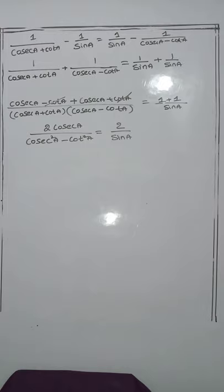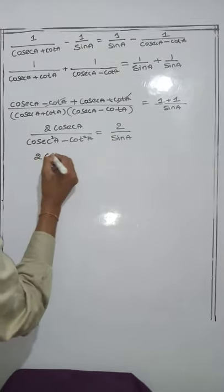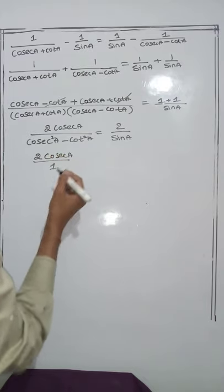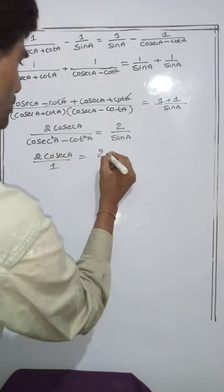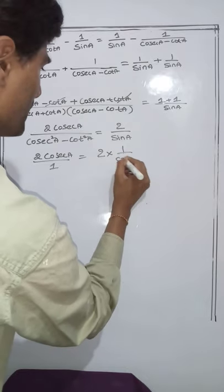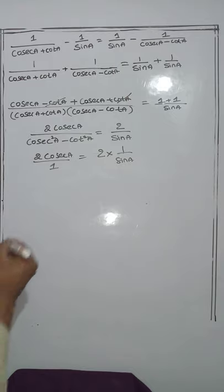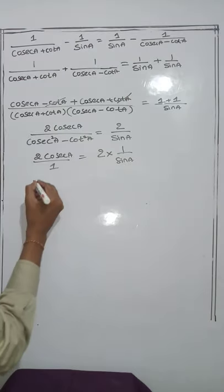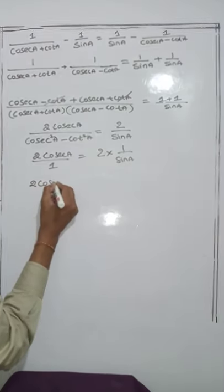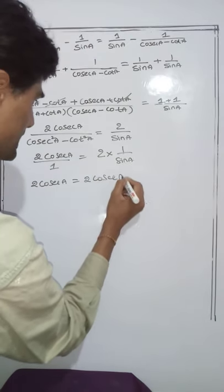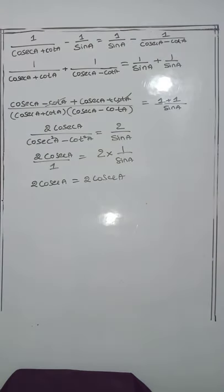Now applying the identity cosec squared A minus cot squared A equals 1. Therefore, 2 cosec A by 1 equals 2 into 1 by sin A. You can simplify that or leave it. Therefore, 2 cosec A equals 2 cosec A — that completes the problem.